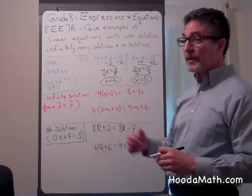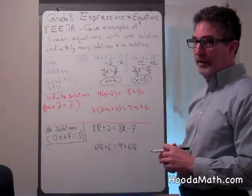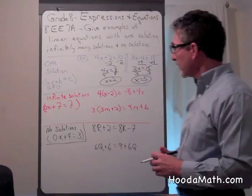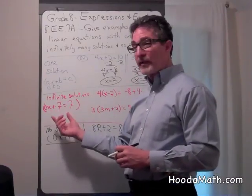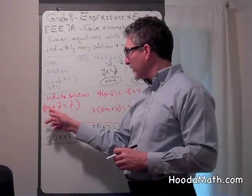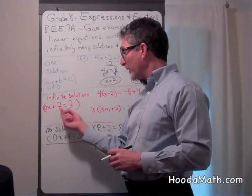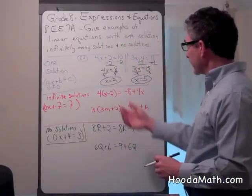Infinite solutions means any number can solve this particular equation. You can eventually get to the form where 0 times x plus 7 equals 7, which would be 7 equals 7. So let's look here.